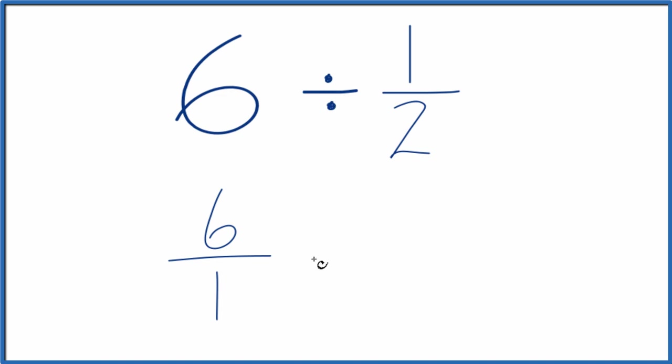And instead of division, we're going to multiply by the reciprocal of 1 half. So we move the denominator to the top and the numerator to the bottom, so 2 over 1.